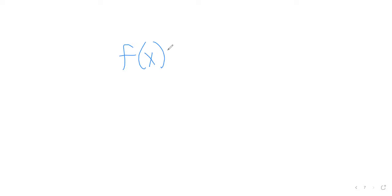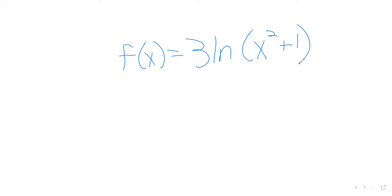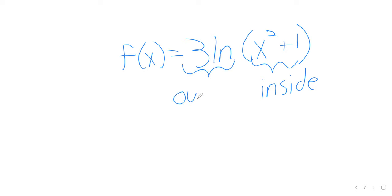What if f of x equals 3 times the natural log of x squared plus 1? What would the inside function be? X squared plus 1 — that's it exactly. Once again, the inside function is literally inside the parentheses, and the outside function is outside the parentheses.